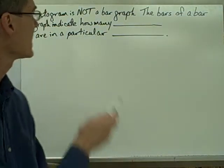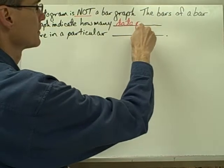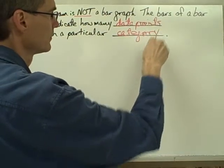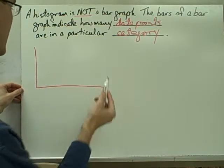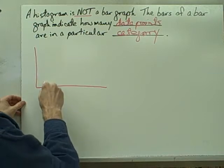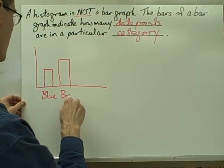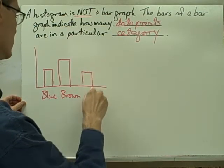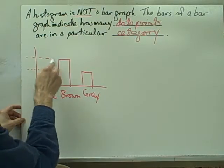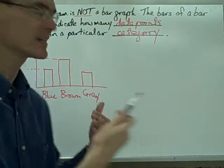One thing to note about histograms is that a histogram is not a bar graph. The bars of a bar graph indicate how many data points are in a particular category, and this is very different from a histogram. For example, say we took a bunch of people and counted the color of their eyes — some people had blue eyes, some had brown eyes. Similar to a histogram, the height of the bars would indicate how many people had blue eyes, brown eyes, or gray eyes. But notice that blue, brown, and gray don't represent particular intervals.